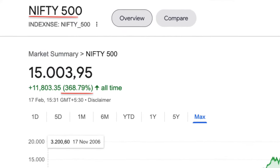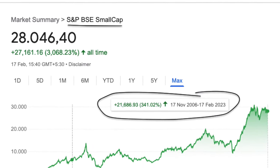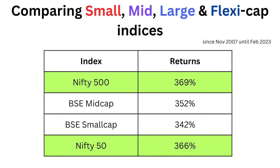We have return data going back to 2006. From November 2006, the Nifty 500 index gave 369% overall returns. The mid cap index gave 352%. The BSE small cap index gave 362%. The Nifty 50 index gave 366%. In the long term, small cap, mid cap, and large cap returns are not significantly different from each other — large cap and flexi cap show similar returns.